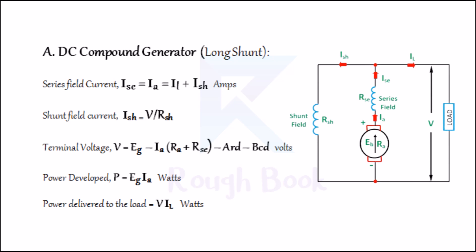8A: Long shunt DC compound generator. Depending on how the series field winding is connected to the shunt field winding, we have long shunt compound generator and short shunt compound generator. In the long shunt DC compound generator, series field current ISE = IA = ISH + IL. Shunt field current ISH = V / RSH. Terminal voltage V = EG − IA(RA + RSE) − armature reaction drop − brush contact resistance drop in volts. Power developed P = EG × IA in watts. Power delivered to the load = V × IL in watts.